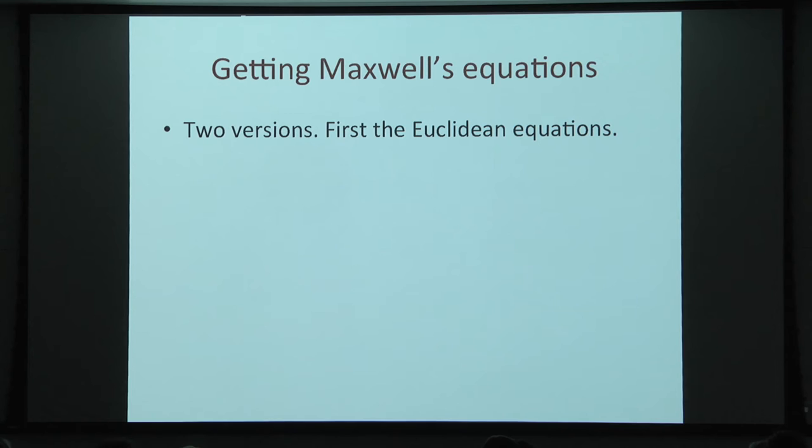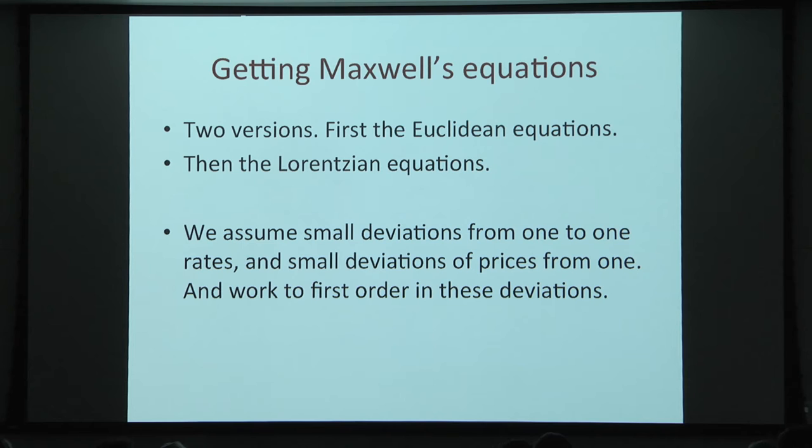I'll try to describe some ways to get Maxwell's equations. I'll discuss two versions: one where we get the Euclidean equations, and another where we get the Lorentzian equations — it's a little harder to get the Lorentzian. It's simpler to get the equations when we have only small deviations from one-to-one exchange rates and small deviations of prices from one, so we'll work to first order in those deviations.